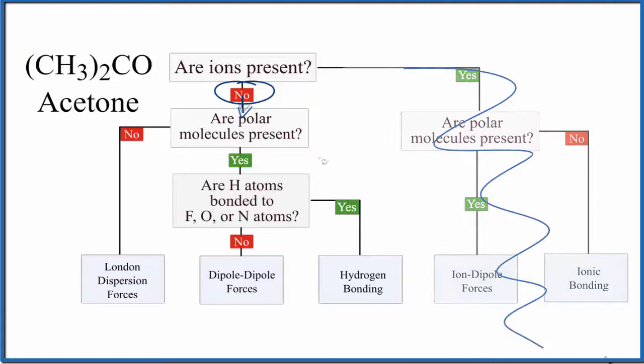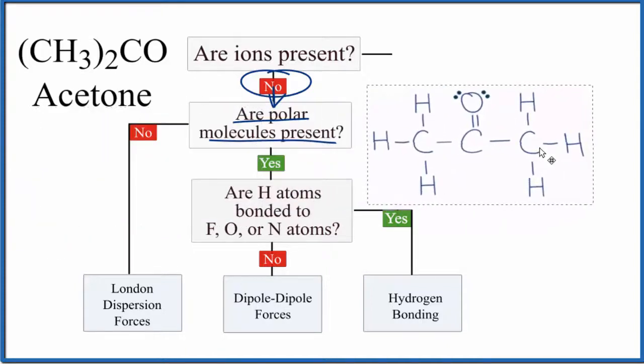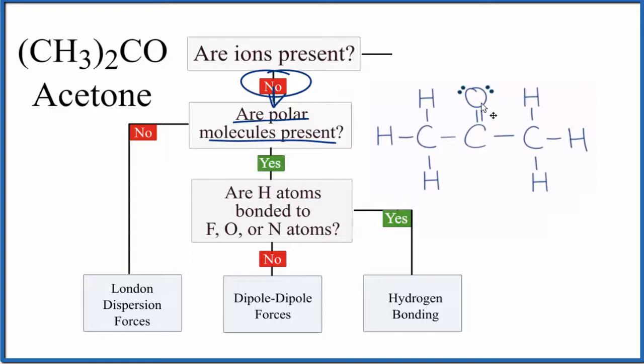We ask: are there any polar molecules present? Is acetone a polar molecule? It's helpful to look at the Lewis structure for acetone. We can see we have this oxygen here right in the middle of the carbons with a methyl group on either side. Since the oxygen is more electronegative than the carbon, we really need to look at this in three dimensions to figure out whether the whole molecule is polar.